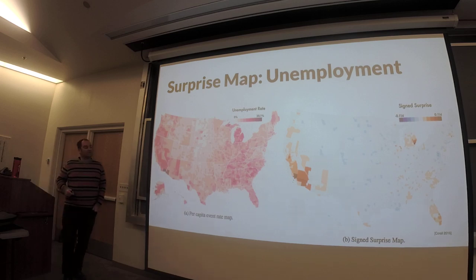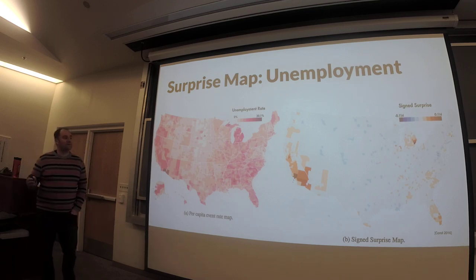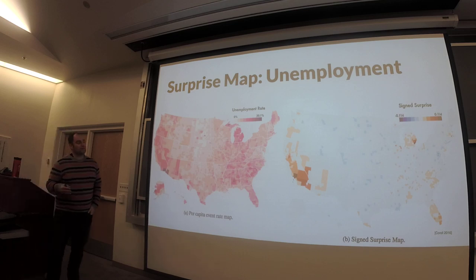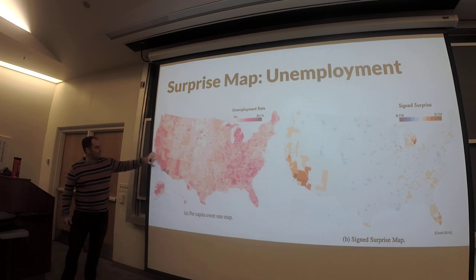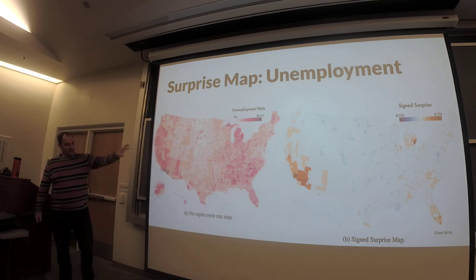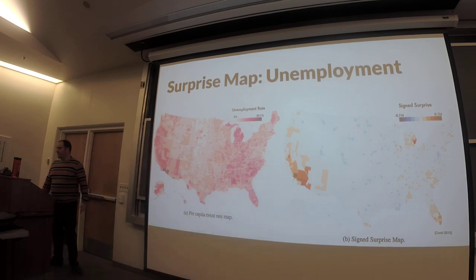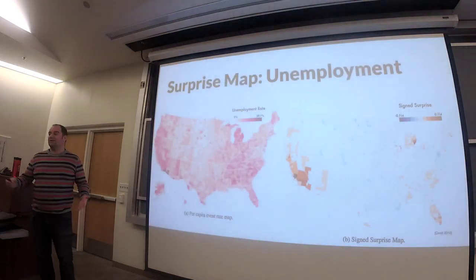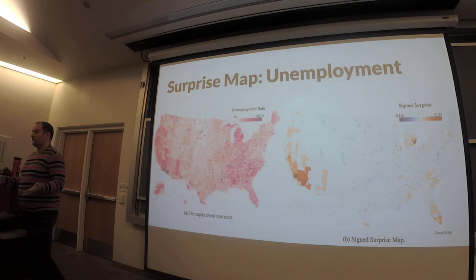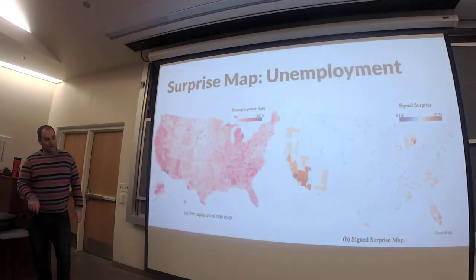If you look at unemployment across the United States, we usually think rural areas have high unemployment. If you look at per capita unemployment rates, you see some weird patches — high unemployment in California, Michigan, and throughout the east, varying a lot by county. But if you do this with a surprise map correcting for small counties, most of middle America essentially goes away — it's what you would statistically expect. But you still see persistent high unemployment rates in California, Michigan, and the south.